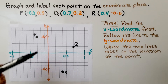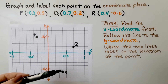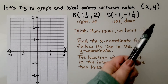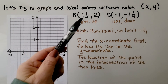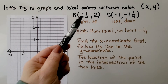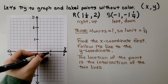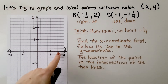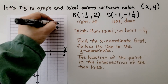Now let's try to graph and label points without color. Remember: x is the first value, y is the second. For Point R at one-and-a-half for x — positive, so we go right from the origin. Here's one, here's two, so one-and-a-half is right in between. The y value is two, so we go up to positive two. That's Point R.